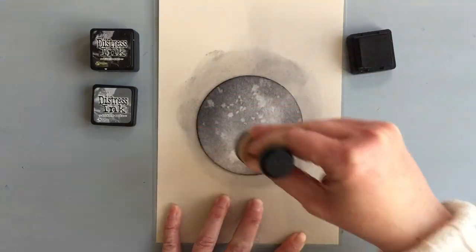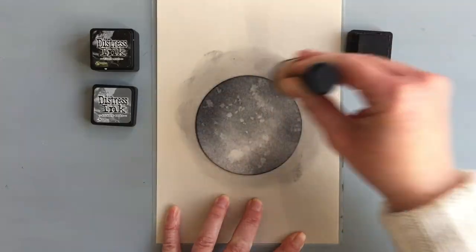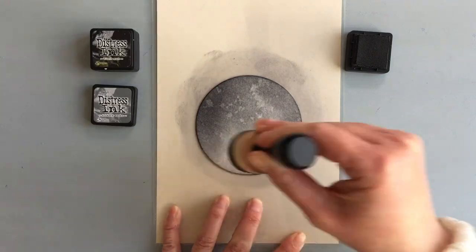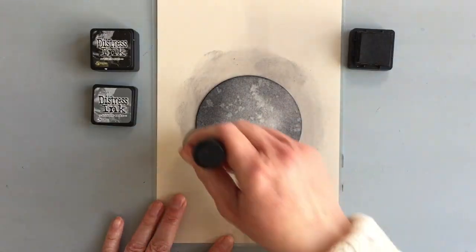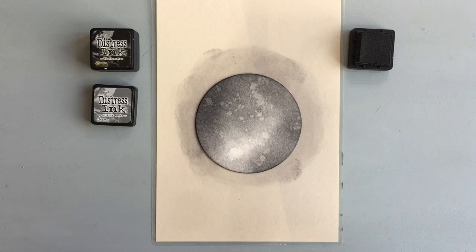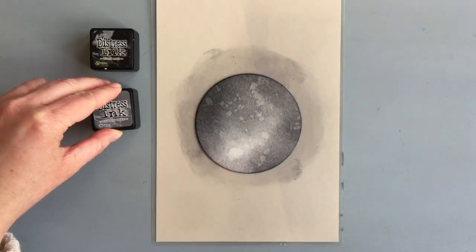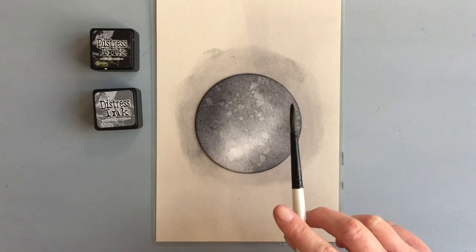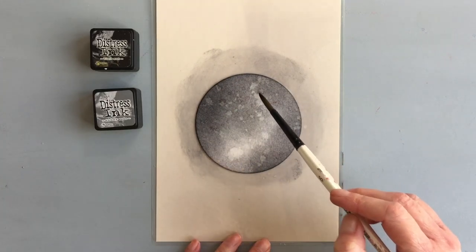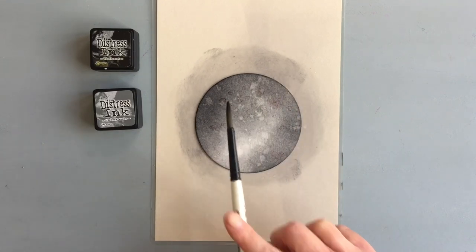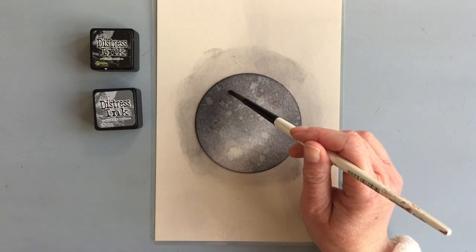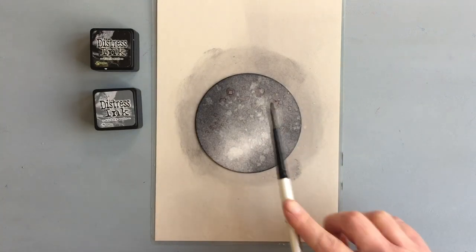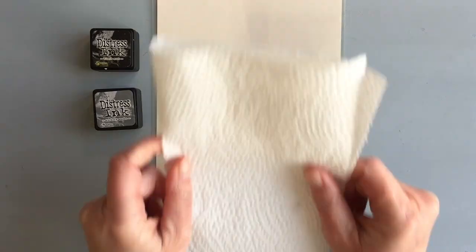I applied another layer using only the hickory smoke, and then I added additional droplets. The size of the droplets depends on a few things: the size of the brush and how much water you have on the brush. Bigger brush with more water will create bigger droplets. I was using a size 6 brush.